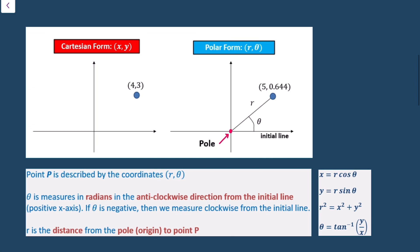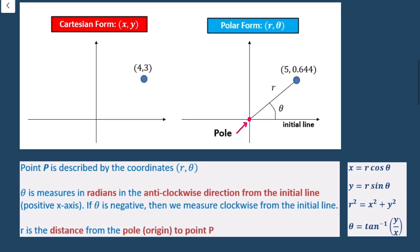So I have here a point in Cartesian form, (4, -3), which I've converted to polar form. In polar form, I always have r and theta. r represents the distance from the pole to the point, and theta is the angle made with the initial line, measured in radians anticlockwise. If theta is negative, we measure clockwise from the initial line.